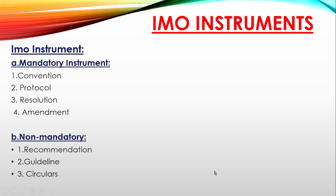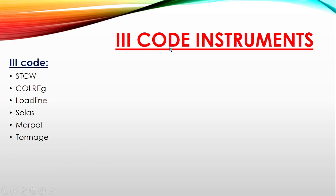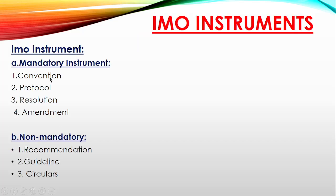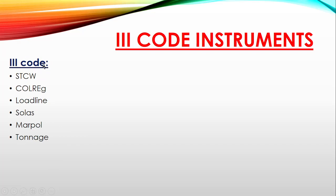An important exam tip: if asked what IMO instruments are, state there are two types — mandatory instruments (Convention, Protocol, Resolution, Amendment) and non-mandatory instruments (Recommendation, Guideline, Circular). If asked specifically about the IIII core instruments, these are STCW, COLREG, Load Line, SOLAS, MARPOL, and Tonnage. The IIII core works on the IMO IMSAS audit scheme.